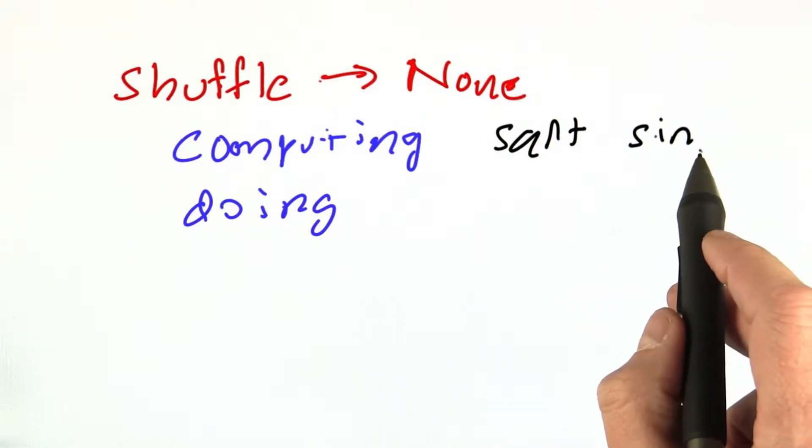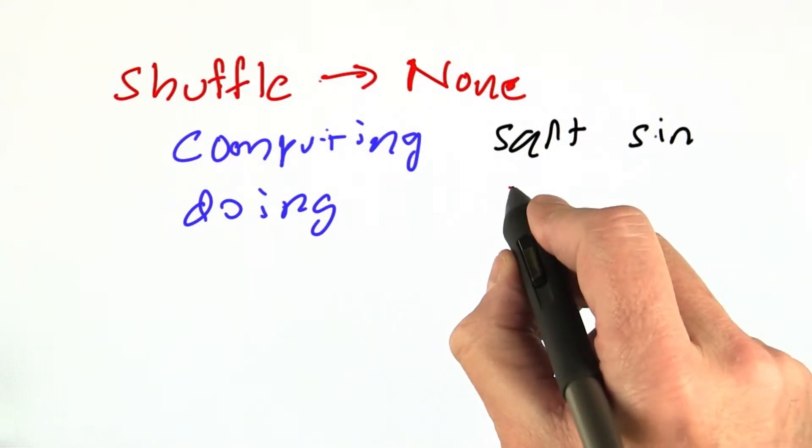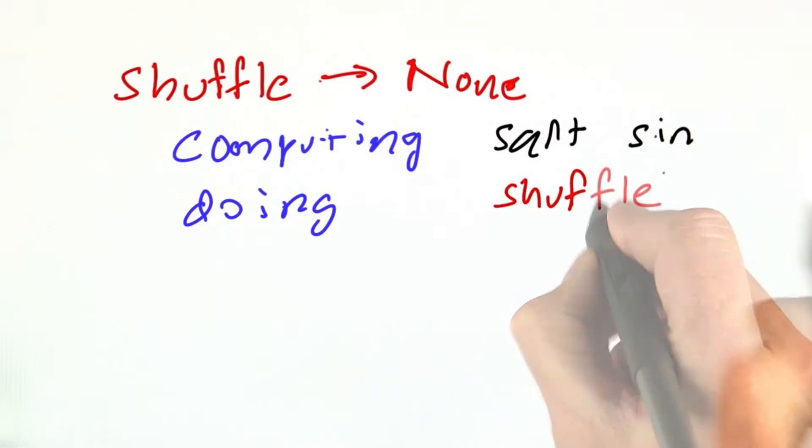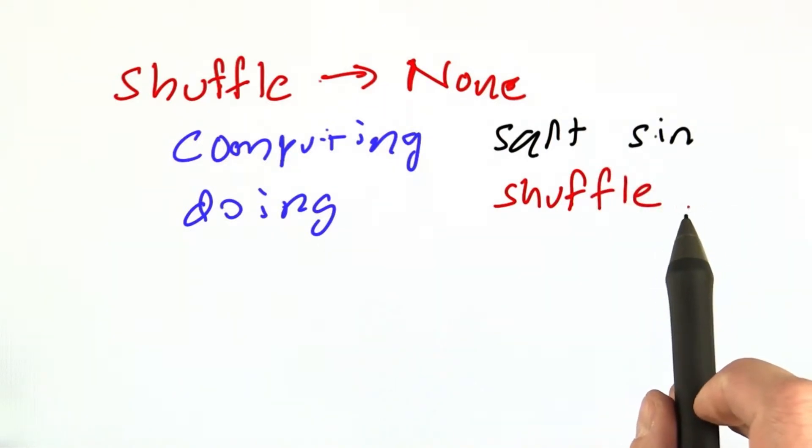They don't modify the input and they create a new value as a result. But functions or subroutines or methods like shuffle are different. They take an input and modify that input.